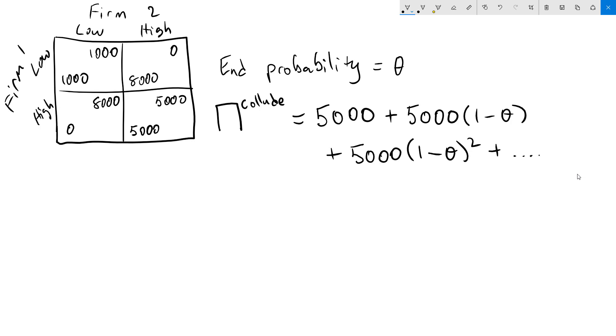Note that since 1 minus theta is a number between 0 and 1, the higher the exponents, the lower it gets. That is, the lower the chance the game will last to that period. Since the probability of getting to these later and later periods is lower and lower and lower, our firms are going to weight those payoffs accordingly. Based on the formula for a geometric series, this is going to come out to 5,000 over theta.